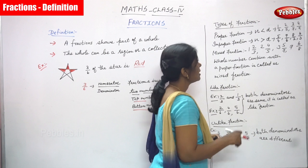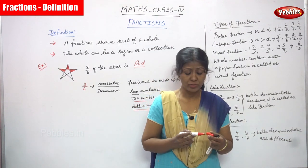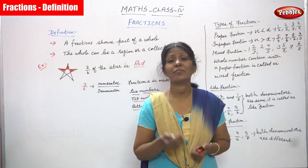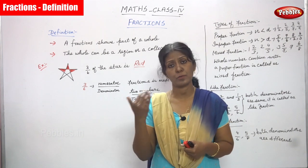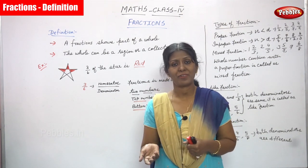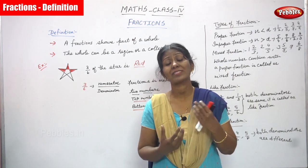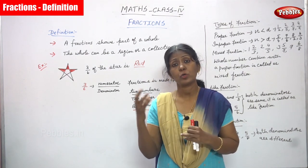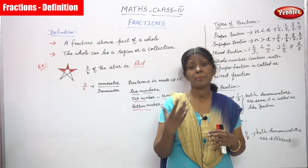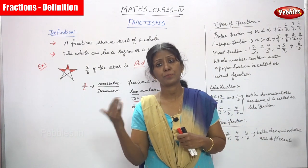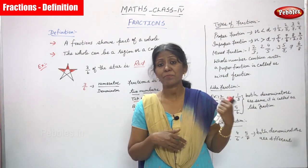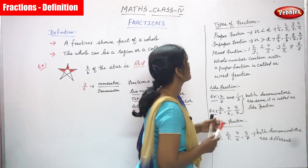Now we are going to see the types of fractions. There are many types, but now we are going to see proper fraction, improper fraction, and mixed fraction. Proper fraction means the numerator is always less than the denominator. Improper fraction means the numerator is greater than the denominator. Mixed fraction is composed of a whole number combined with a proper fraction.